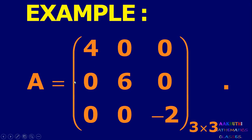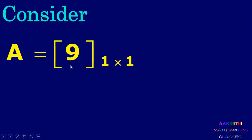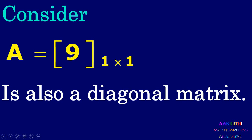Consider example: A equal to [4, 0, 0; 0, 6, 0; 0, 0, -2]. All non-diagonal elements are zero, so this is a diagonal matrix. Also, A equal to [9] is a square matrix of order 1 and is also a diagonal matrix.